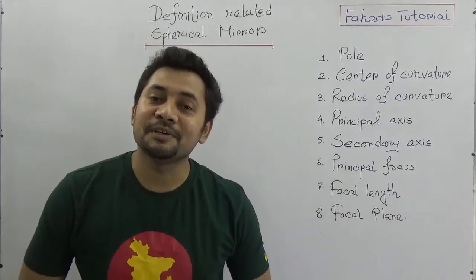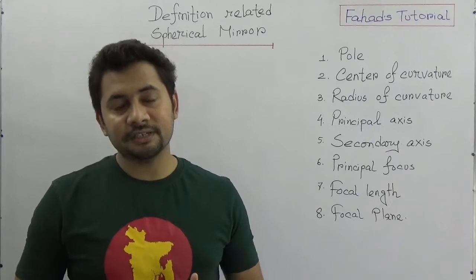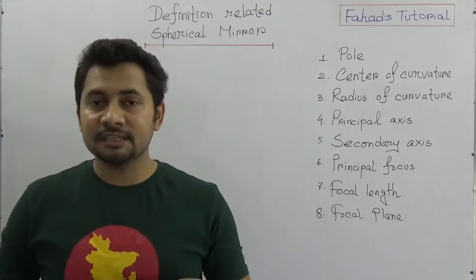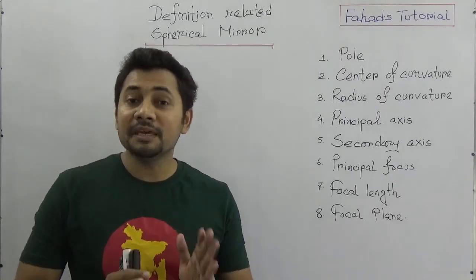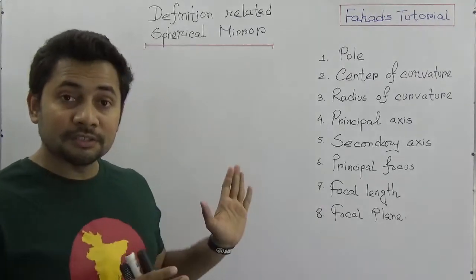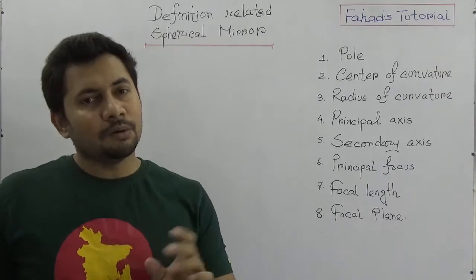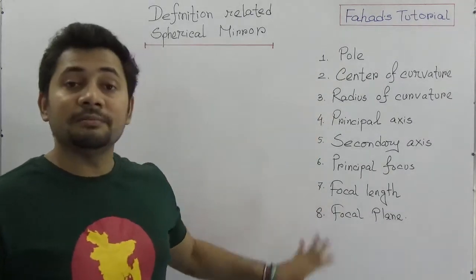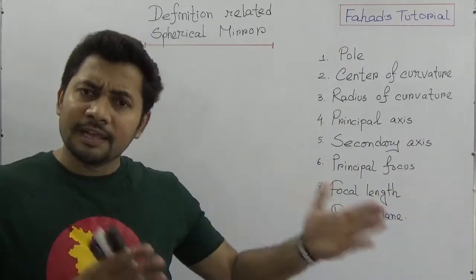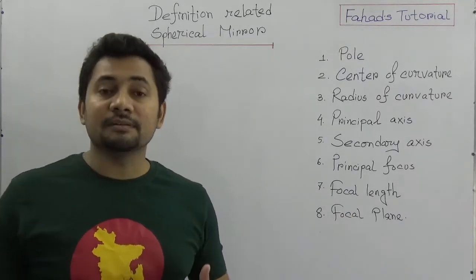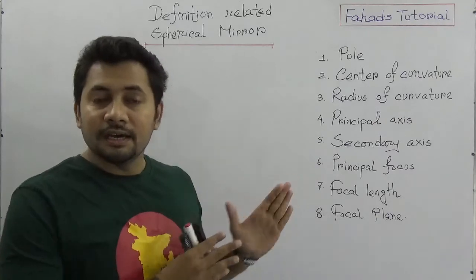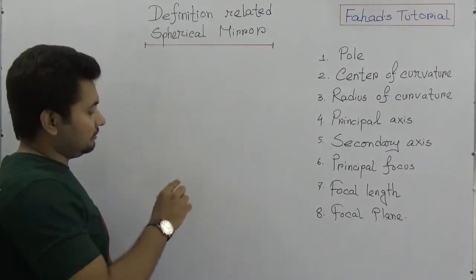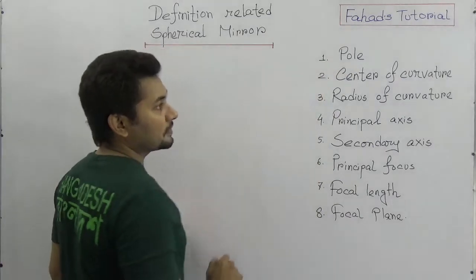Salam alaikum warahmatullah, welcome again to Fahad's tutorial. This is the third tutorial of the playlist on reflection of light. In the previous video I explained about the mirror, and in this video there are some important definitions and terms we need to know for understanding spherical mirrors. There are eight terms that will be discussed: pole, center of curvature, radius of curvature, principal axis, secondary axis, principal focus, focal length, and focal plane.